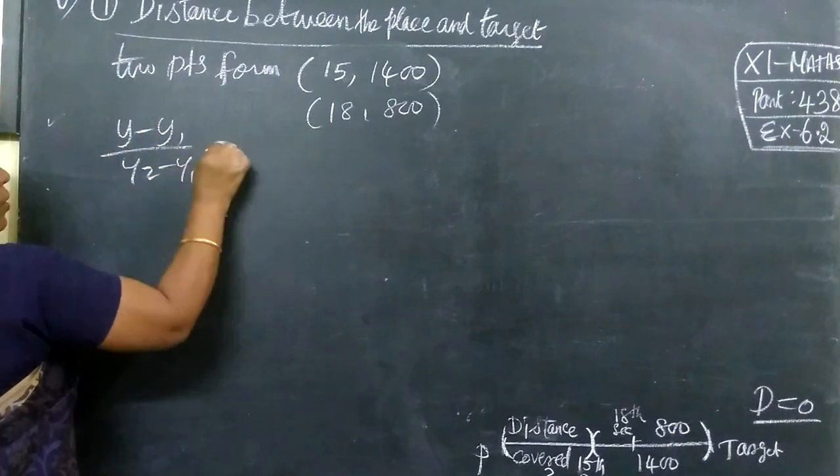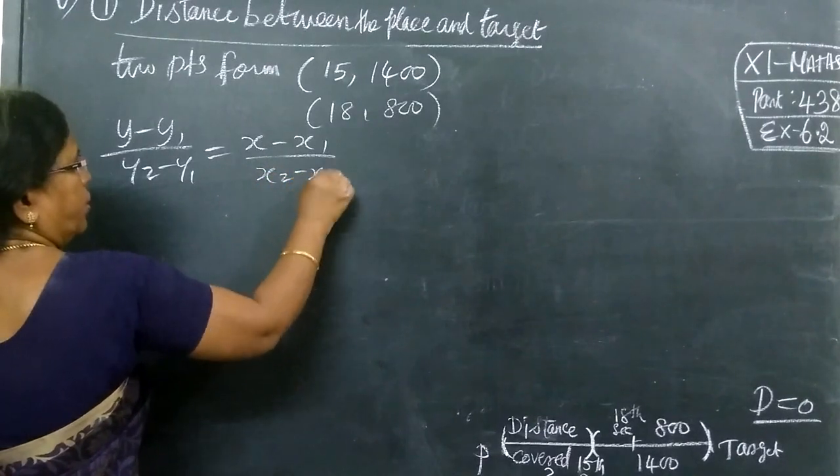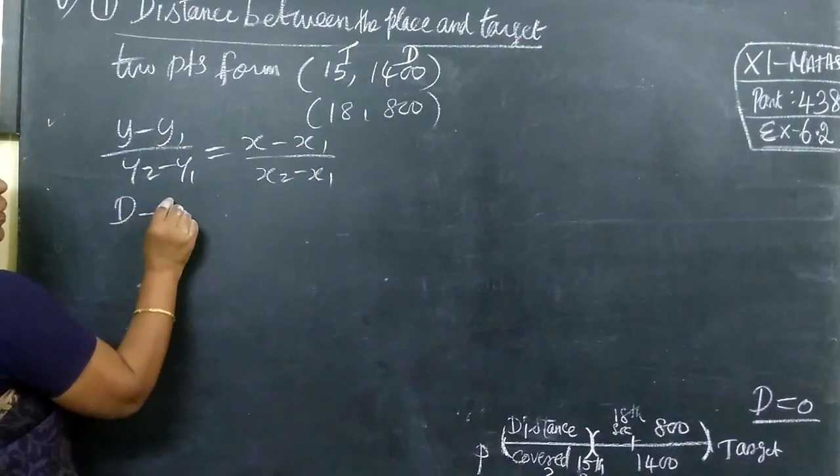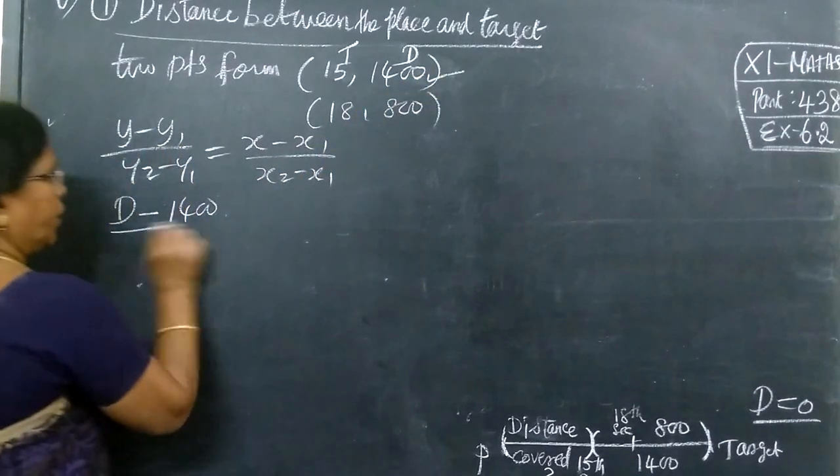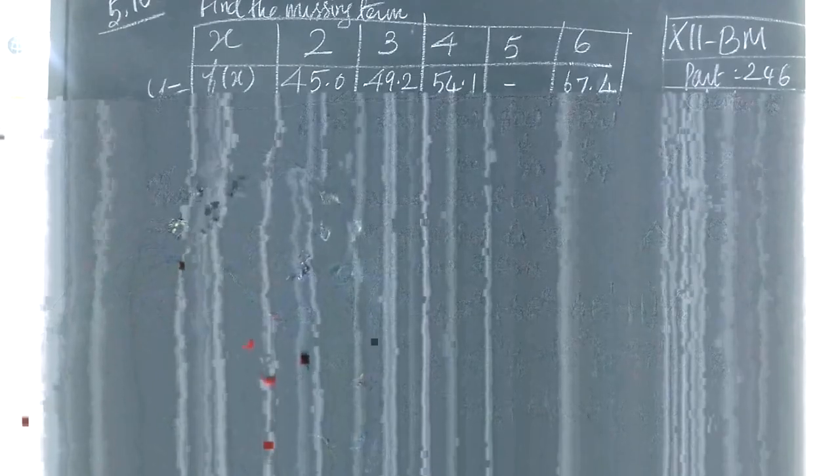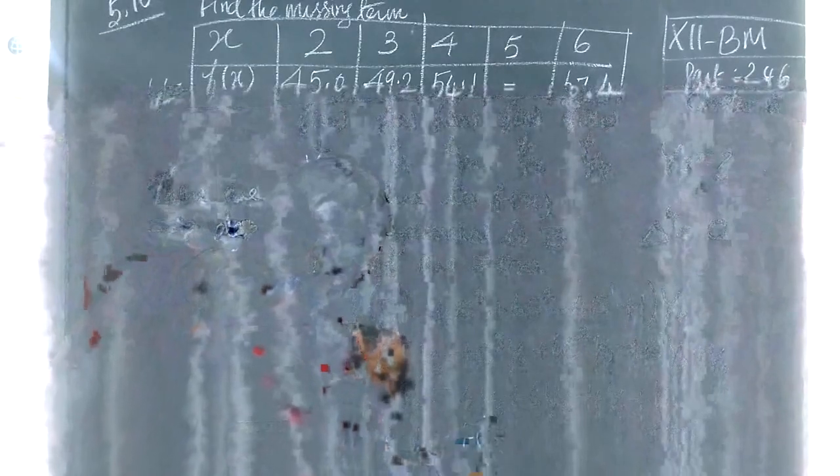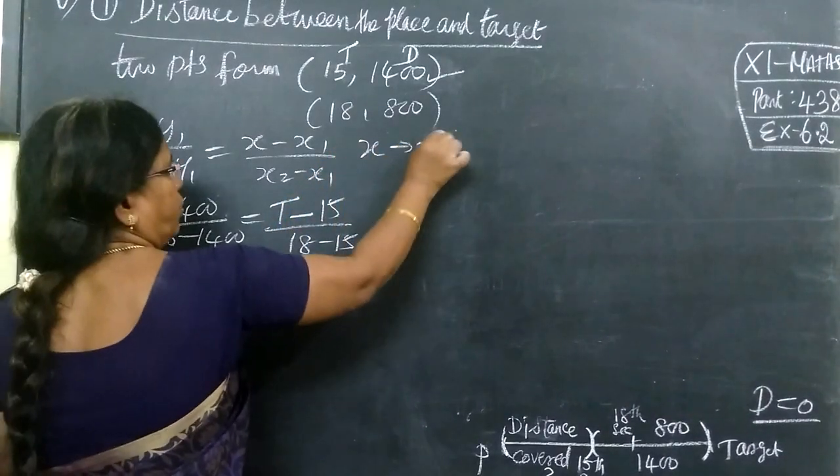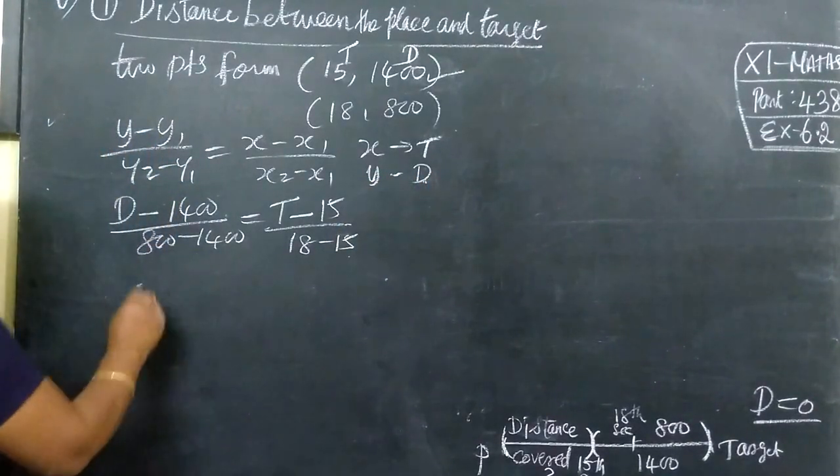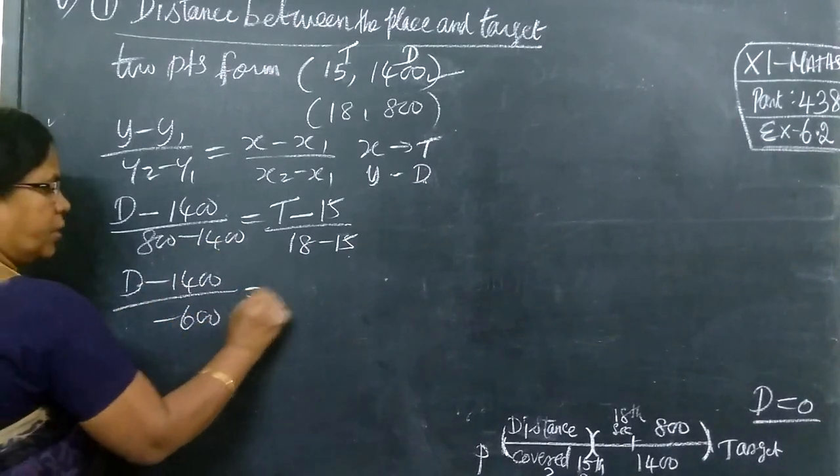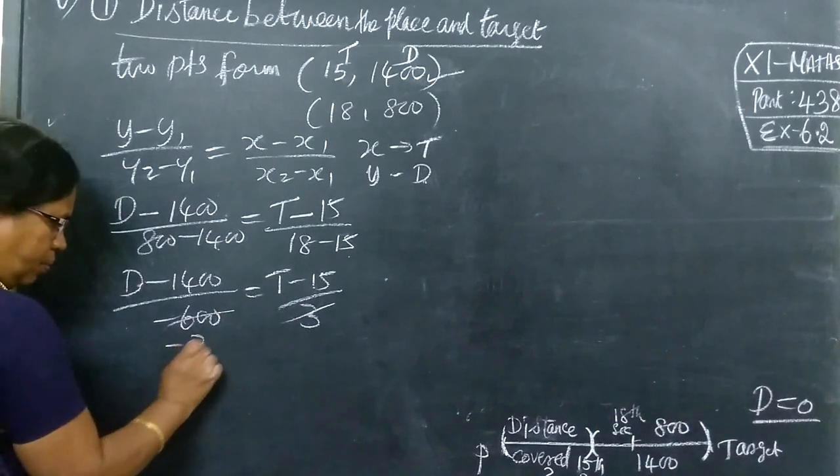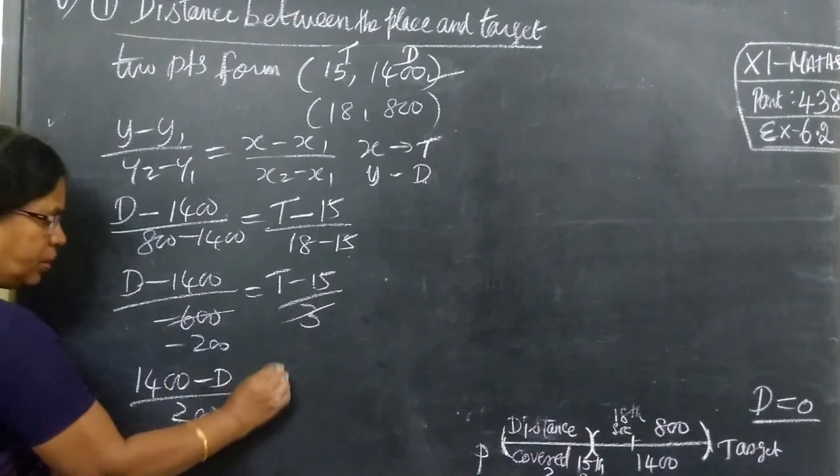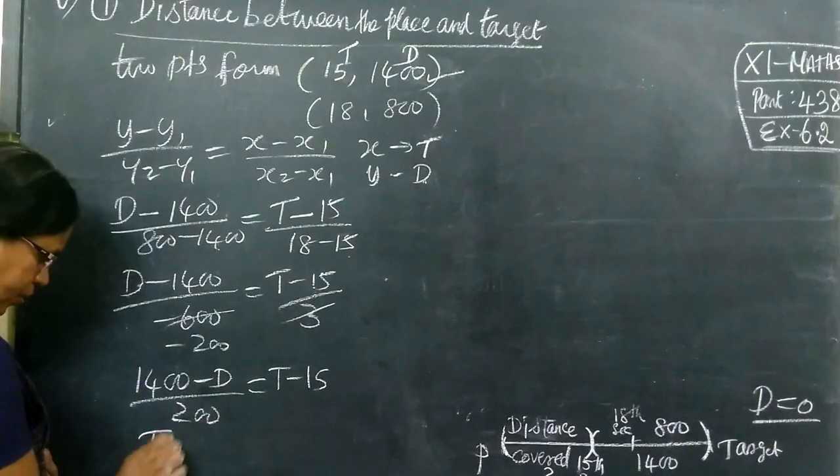If two points are found, y minus y1 by y2 minus y1 equals x minus x1 by x2 minus x1. d minus 1400 by 800 minus 1400, equals t minus 15 by 18 minus 15. So d minus 1400 by minus 600, equals t minus 15 by 3. Therefore, t equals 1400 minus d by 200 plus 15.